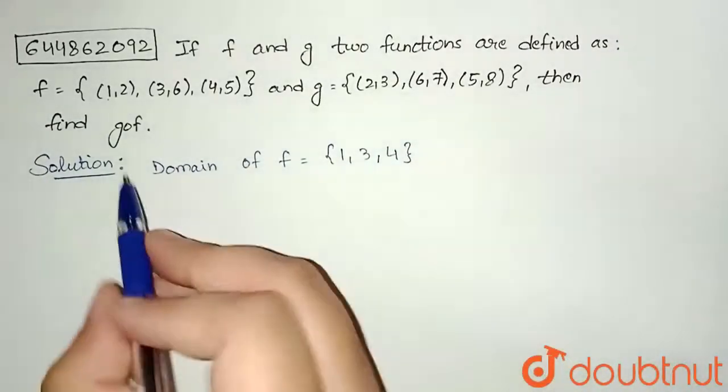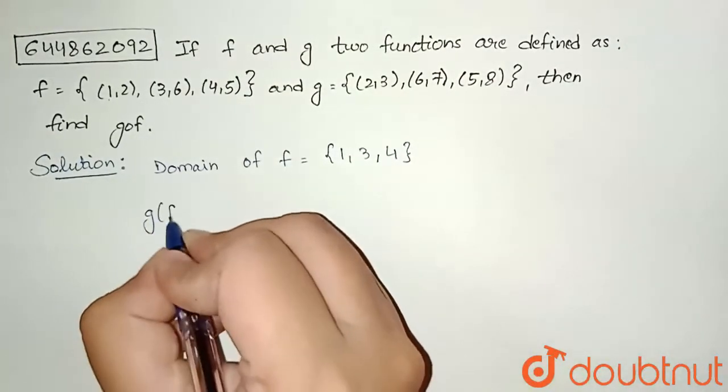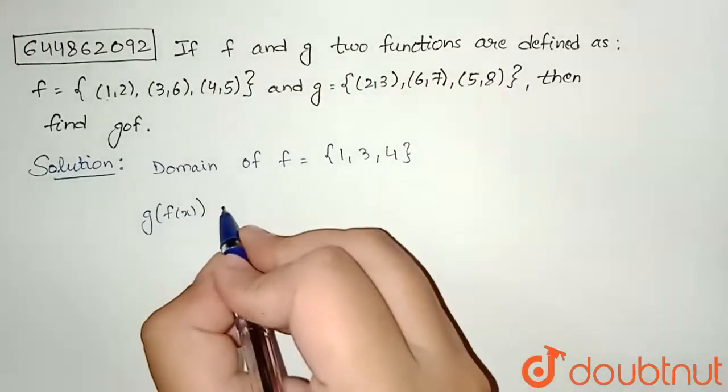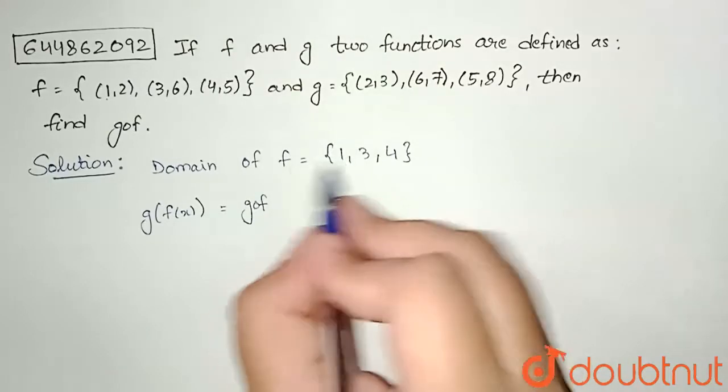Now I need to find gof, so g of f(x) I can write. So we need to find this and that will be equal to gof. So first of all we will put all the values of f and find corresponding value of gof.